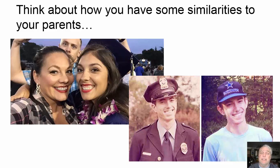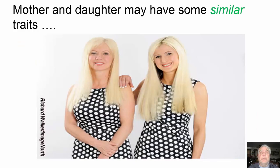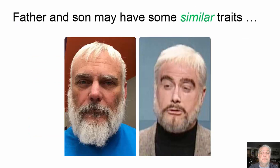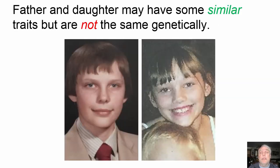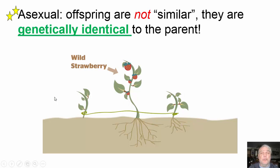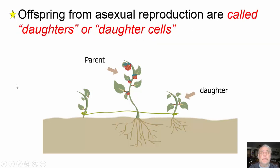Let's think about your parents and some of the similarities you may have with them — the way you look, the way you act, your voice. Mother and daughter may have similar traits, grandmother and granddaughter may share traits, and father and son may share traits. But here's the key point: father and daughter may have similar traits, but they are NOT genetically identical. Asexual offspring, however, ARE genetically identical to the parent — this is guaranteed to be on your test.